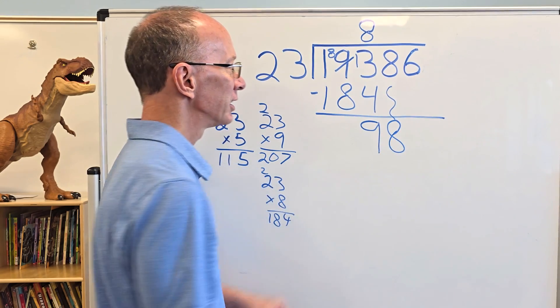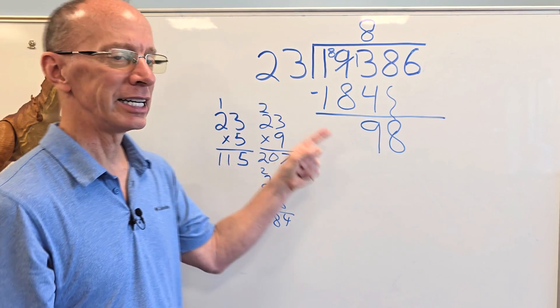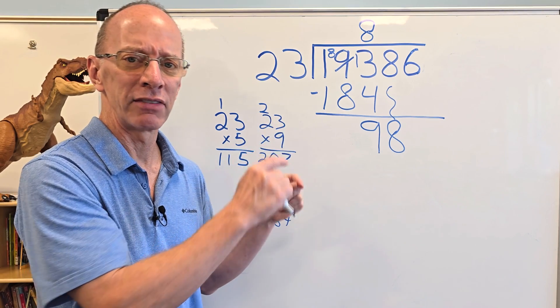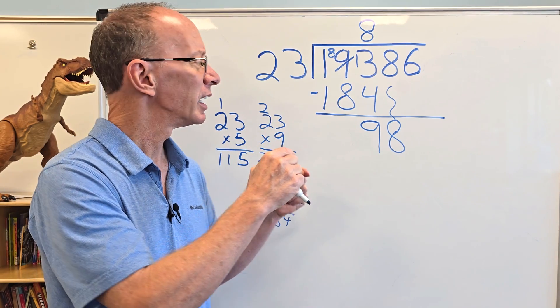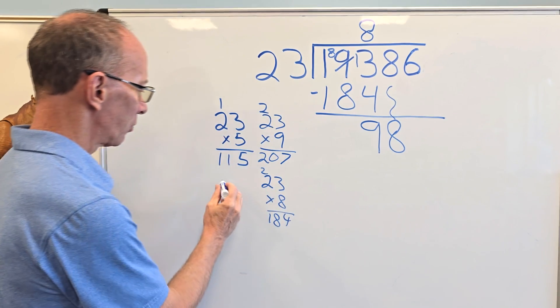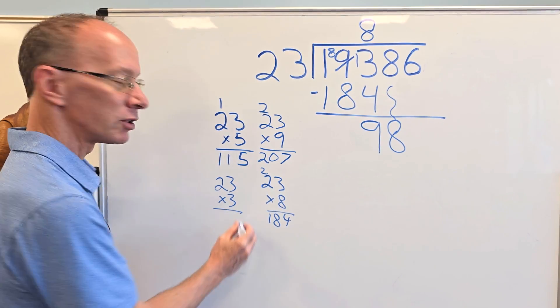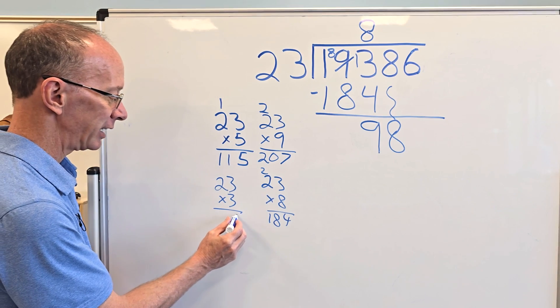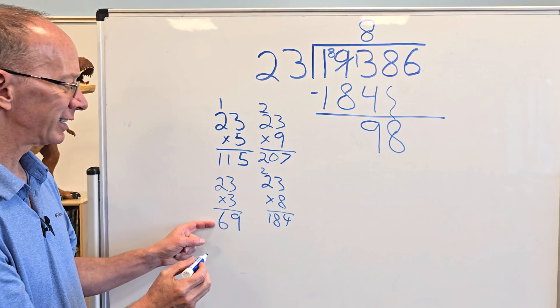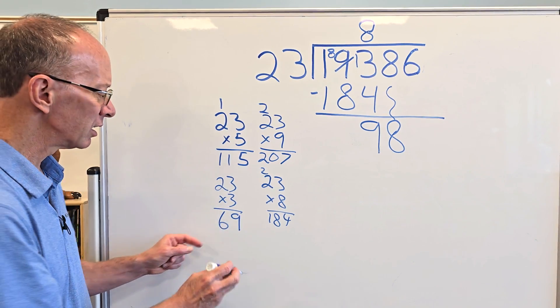So then I bring down the next number right there. So now I got 98. How many times can I put 23 into 98? I'm going to, let's just say it was 25. I think I can put 25. Let's try it three times. So right over here, I'm going to take 23 times three. So three times three is nine and three times two would be six. So I have 69. Let's go just up a little bit more here.